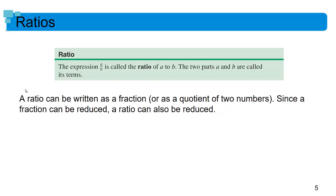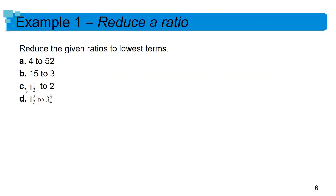In specific math terms, a ratio is any expression a over b where a and b are somehow related — we call those things terms. A ratio can be written as a fraction like a over b, sometimes called a quotient. It can also be written in English as four to fifty-two, fifteen to three, and so on. It can also be written with a colon, so it would be four colon fifty-two, and we read that as four to fifty-two.